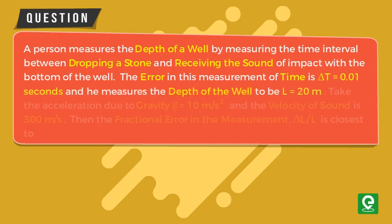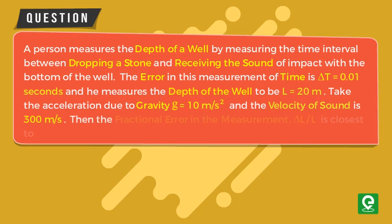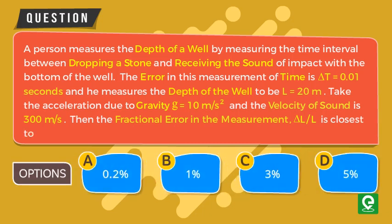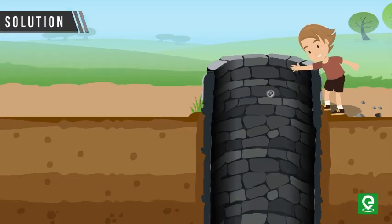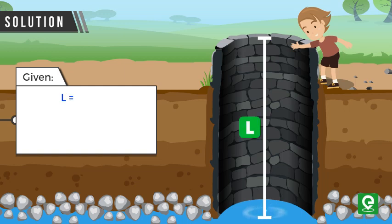He measures the depth of the well to be L equal to 20 meters. Take the acceleration due to gravity G equal to 10 meter per second squared and the velocity of sound is 300 meter per second. Then the fractional error in the measurement ΔL upon L is closest to. This question was asked in JEE Advanced 2017 exam.